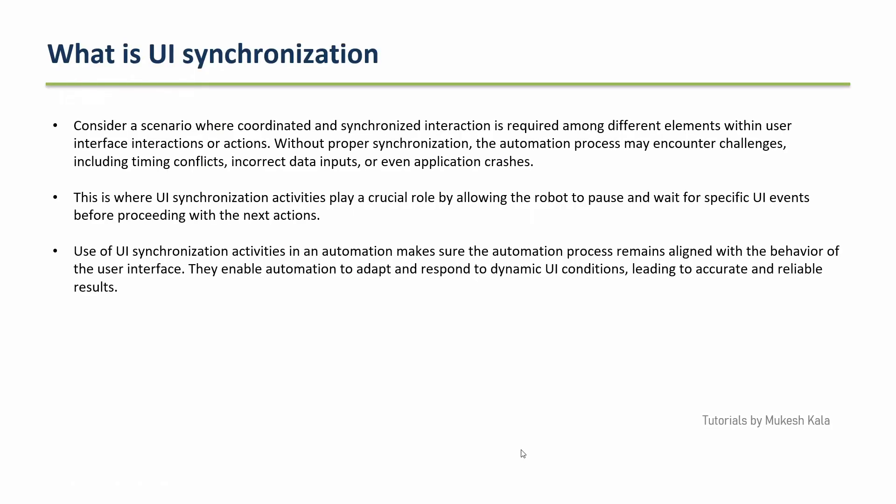Before going deep into the topic of Pick and Pick Branch, let's have a quick recap on what exactly UiSynchronization is. Consider a scenario where you are writing an automation where the interface is dynamic, and before you do any action you have to make sure that the interface you are trying to automate is in the correct state. A simple example could be that before extracting data from a website, you need to make sure that the website is already logged in or on the correct page. That is called UiSynchronization, or user interface synchronization, in UiPath.